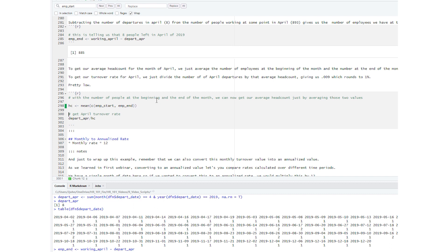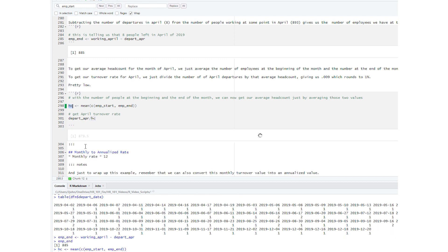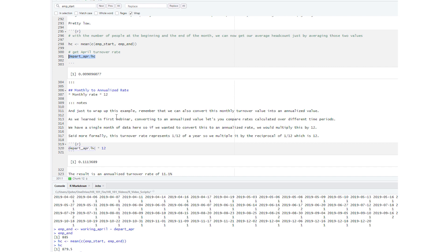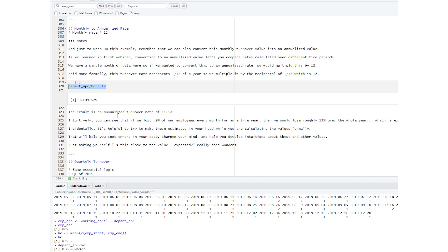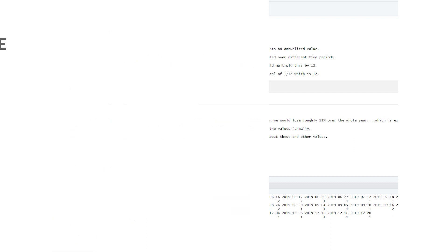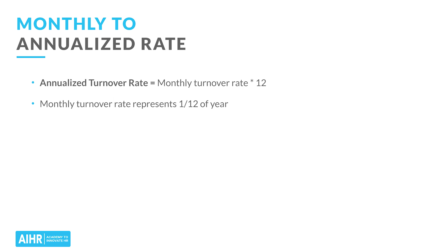To get our average headcount for April, we average the 874 employees at the beginning of the month and the 885 at the end of the month, giving us 879.5. To get our turnover rate for April, we divide the 8 April departures by that average headcount of 879.5, giving us 0.009, which rounds to about 1% — that's pretty low. To convert this monthly value to an annualized rate, we multiply by 12. This turnover rate of 0.9% represents one twelfth of a year, so multiplying by 12 gives us an annualized turnover rate of 11.1%.